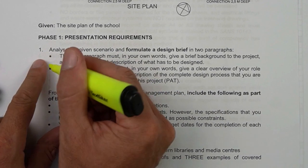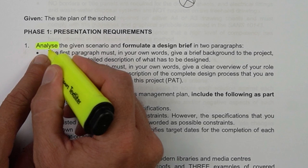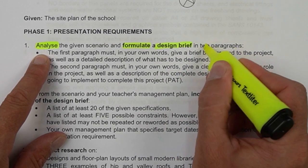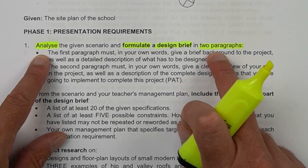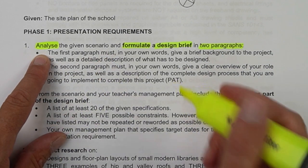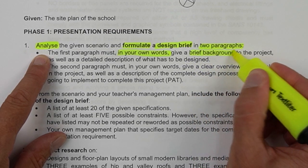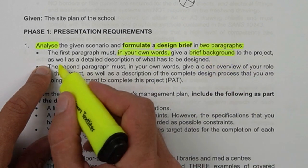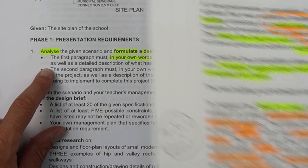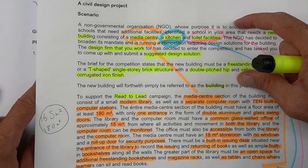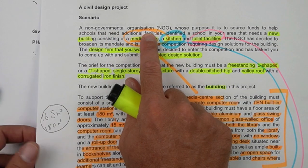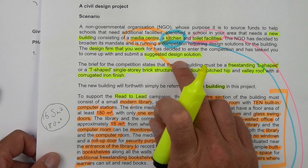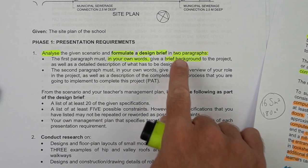They ask you to analyze - that means really think it through and gain understanding of the given scenario - and then formulate a design brief in two paragraphs. The first paragraph must be in your own words and give a brief background to the project as well as a detailed description of what has to be designed. The first part covers the background: it's a new building for a non-governmental organization, there's a competition, you have your own design firm and have to come up with a suggested design solution.